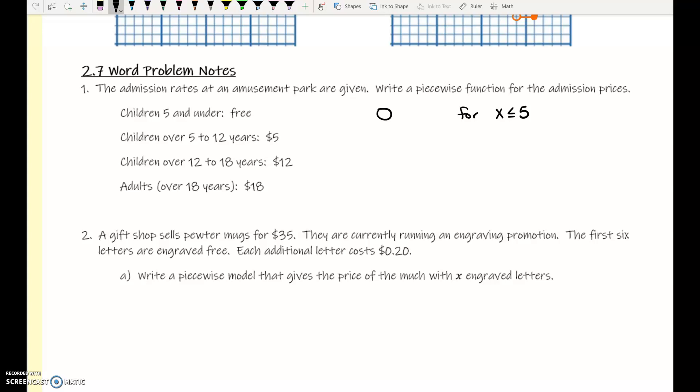The next one is children over 5 and up to 12 years are $5. So that piece is 5. They pay $5. For, we're going from 5 to 12. x is somewhere in the middle. We have to do less than and then less than equal to. Do you see why it's less than, then less than equal to?